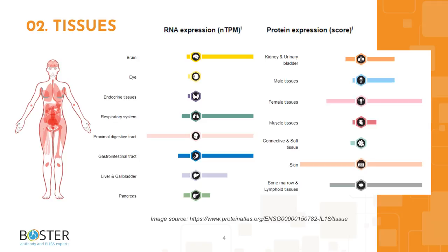You can find more information on proteinatlas.org to check out which cell lines express IL-18 and which ones don't. This information will come in handy when designing positive and negative controls for western blot and immunohistochemistry.